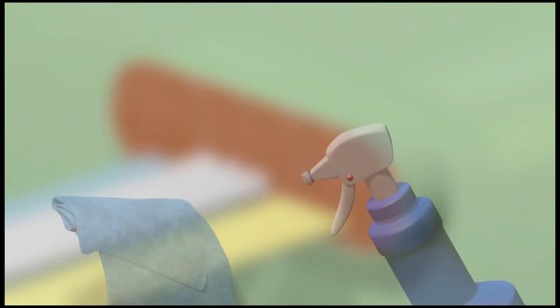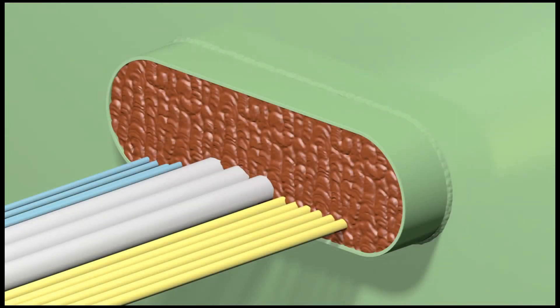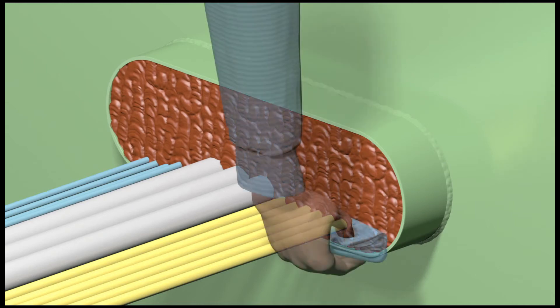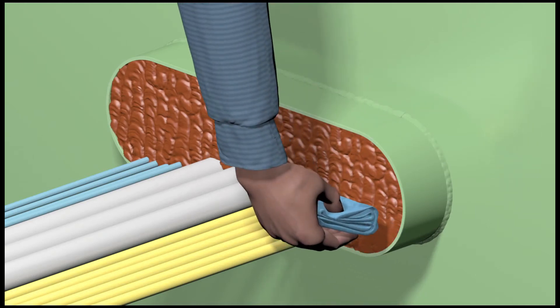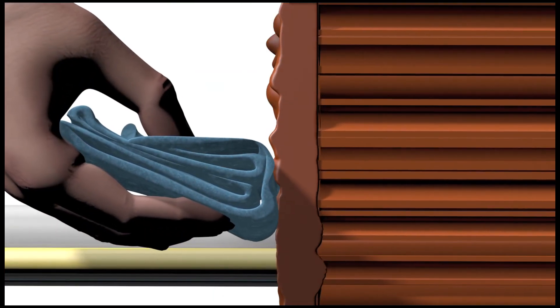To smooth the surface of the Noferno sealant, a cloth is sprayed with water. This prevents the sealant from sticking to the cloth. Do not use soap water. Soap water will have a negative impact on the adhesive properties of the sealant.